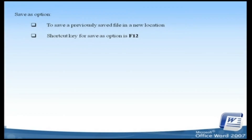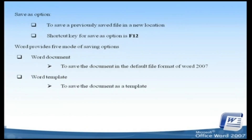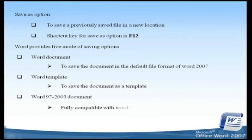The new Save As option in Word provides five modes of saving options. They are: Word Document, used to save the document in the default file format of Word 2007 .docx format; Word Template, used to save the document as a template that can be used to format future documents; and Word 97-2003 Document, which lets you save a copy fully compatible with Word 97-2003.